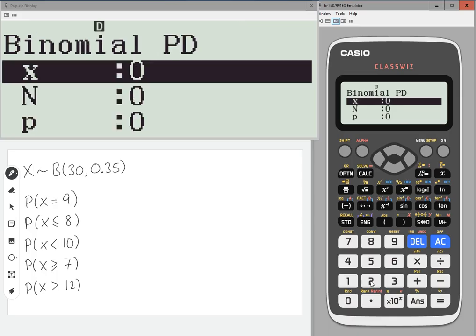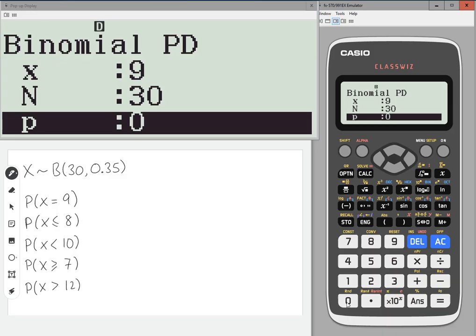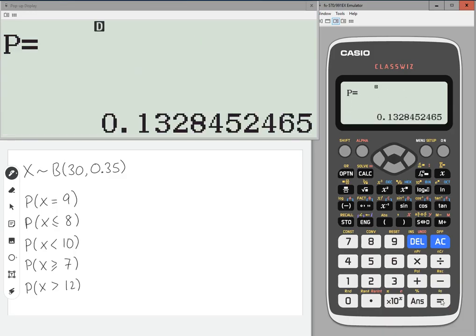Binomial PD is the one we want, so option number 4. For each of these, I'm just going to use the variable, so number 2, and that means we just find a particular value that we want to use. The x value here is 9, n is 30, and p is 0.35. Press equals, and this is what we want to find. So, we want to write these to 4 decimal places, so 0.1328 to 4 decimal places. Aim to never drop that level of accuracy.